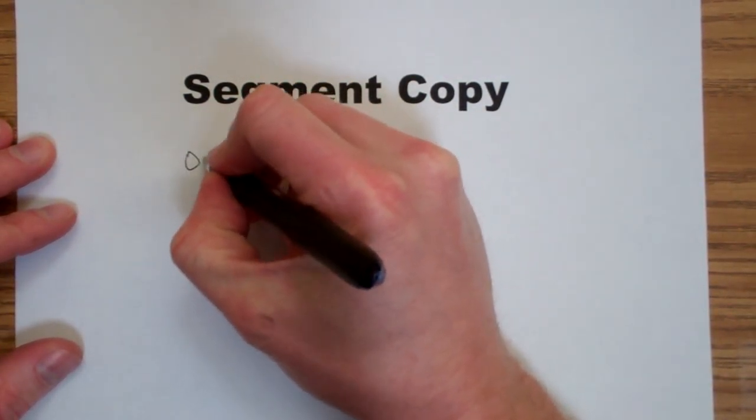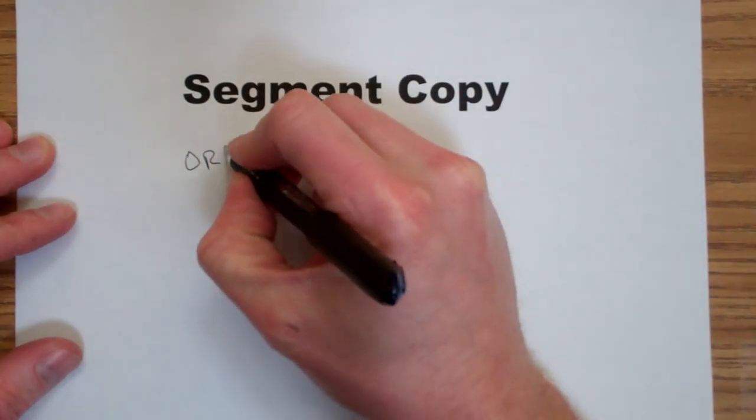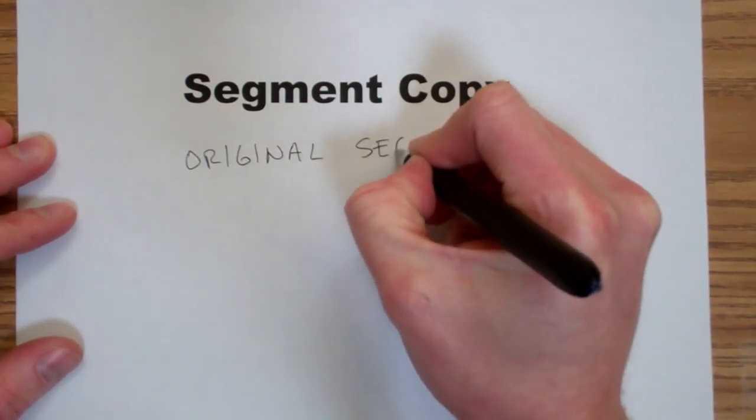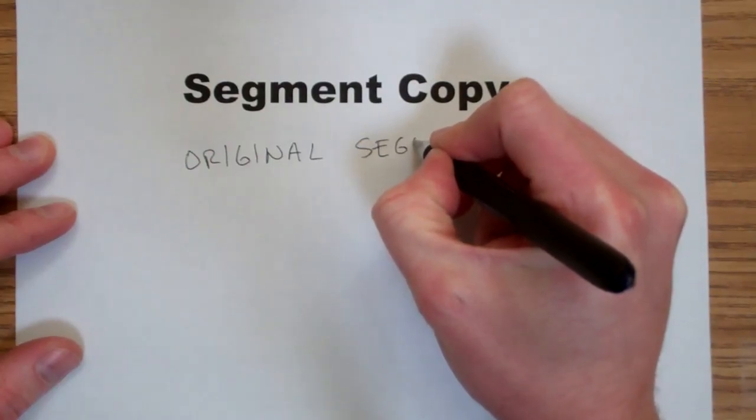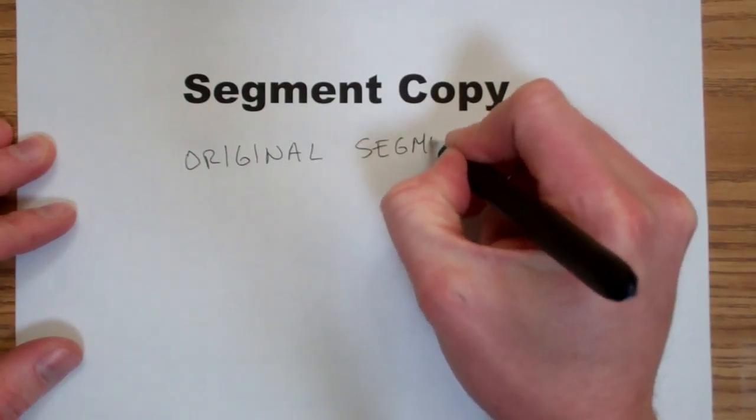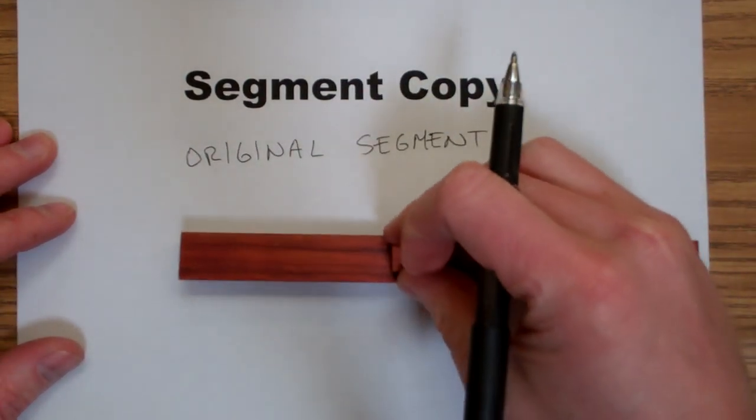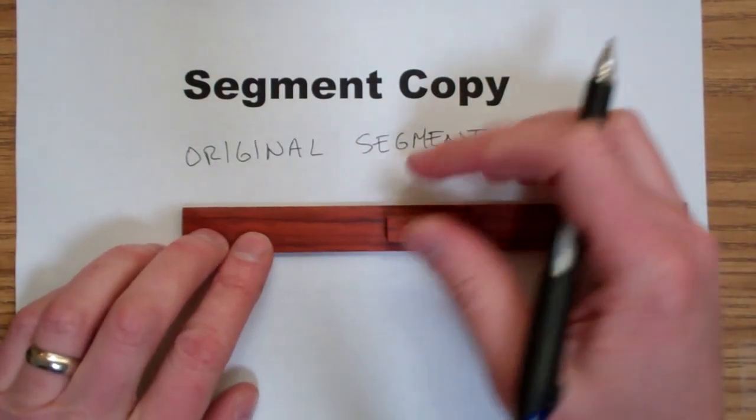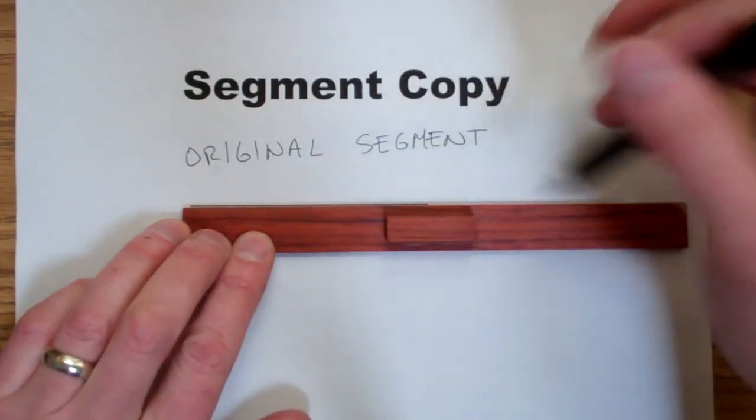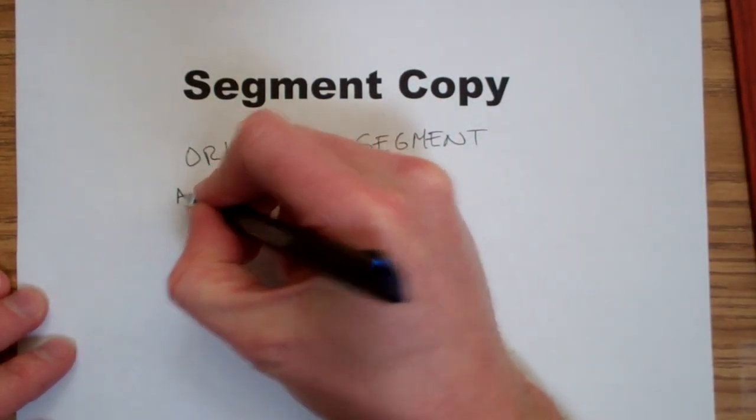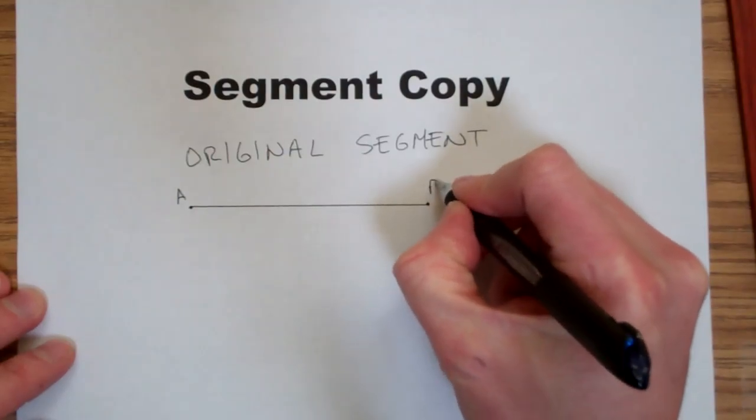To start a segment copy, first you'll need an original segment. So draw a segment about this big and label the endpoints A and B.